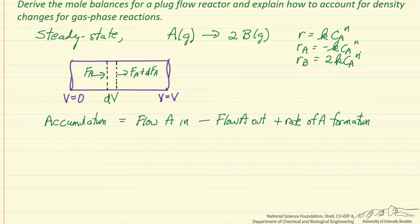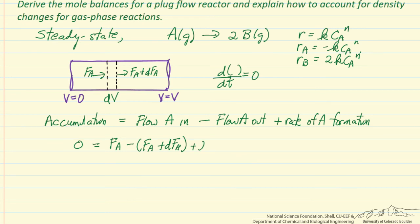First, the accumulation is zero because any derivative with respect to time equals zero at steady state. The flow in is the molar flow rate (moles per time), the flow out has a differential change, and the rate of formation of A — R_A — is the rate per volume (moles per time per volume) times dV. This gives us the mole balance: the change in molar flow rate with respect to volume equals the rate of reaction of A.